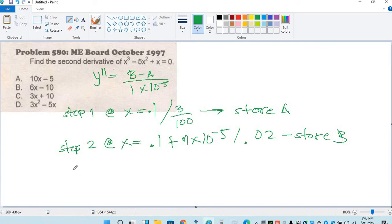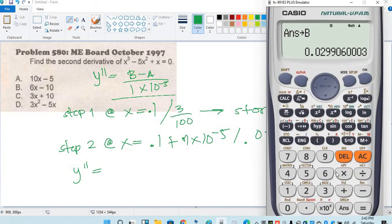For y double prime, use this formula: b minus a over 1 times 10 raised to negative 5. Equal, negative 0.39, store C, equal.